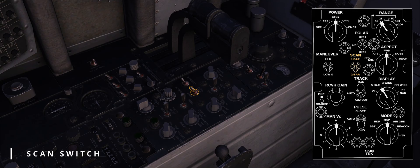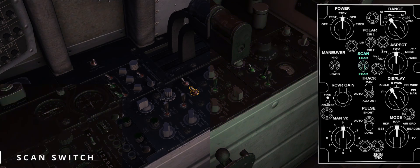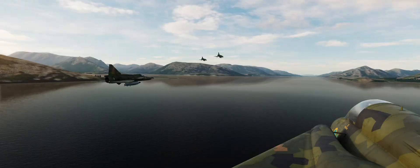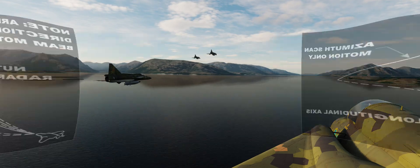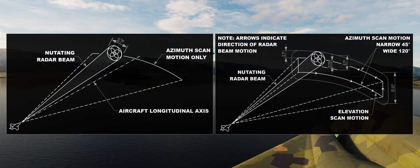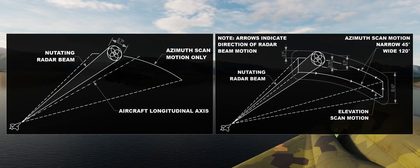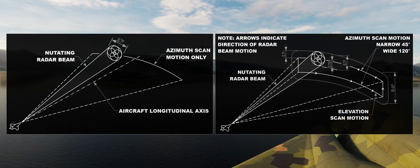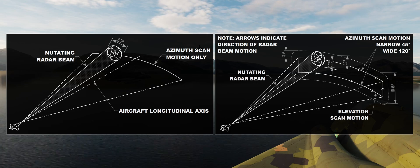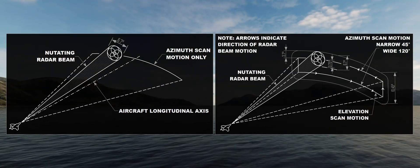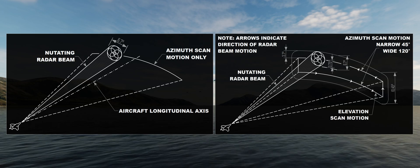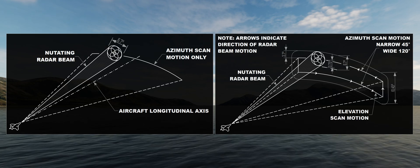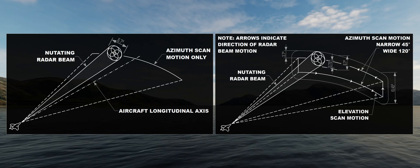If the radar is non-nutating, then one bar covers 3.7 degrees. If two bars are selected, after each azimuth sweep the radar antenna is moved vertically by 3.75 degrees. If the radar pattern is nutating, then one bar covers 6.7 degrees, and two bars cover 10.45 degrees.